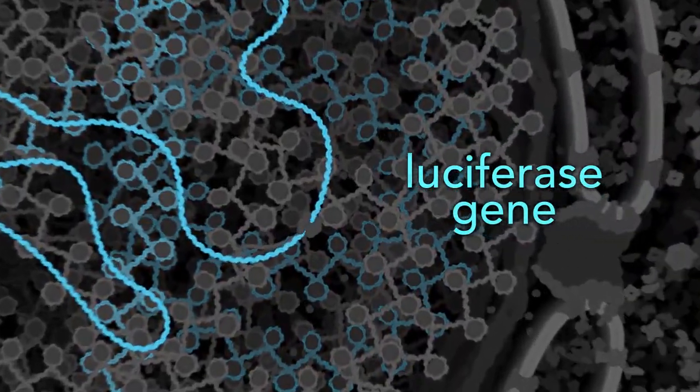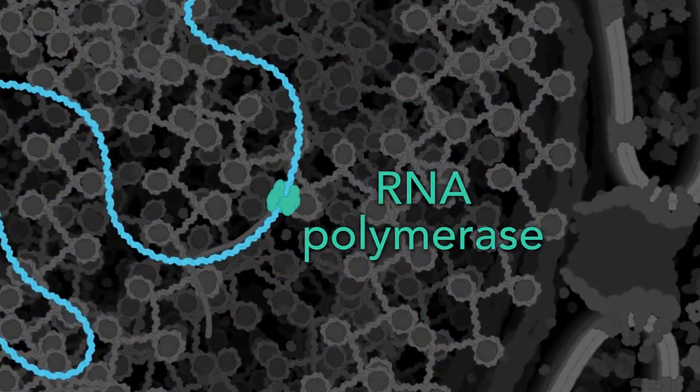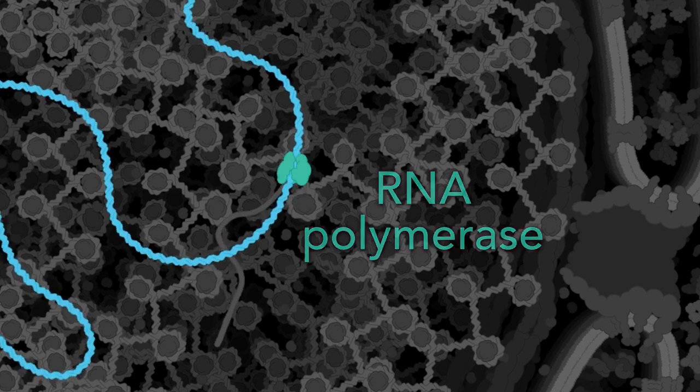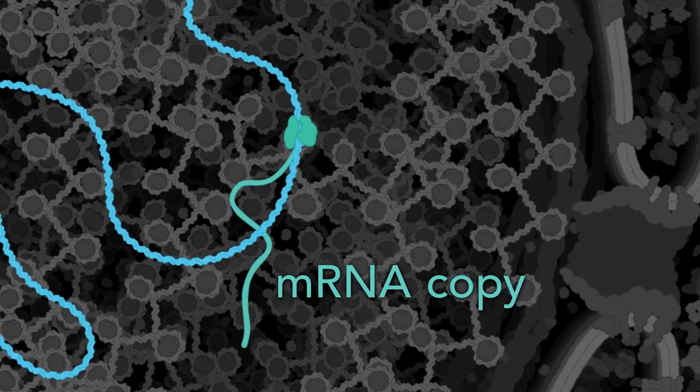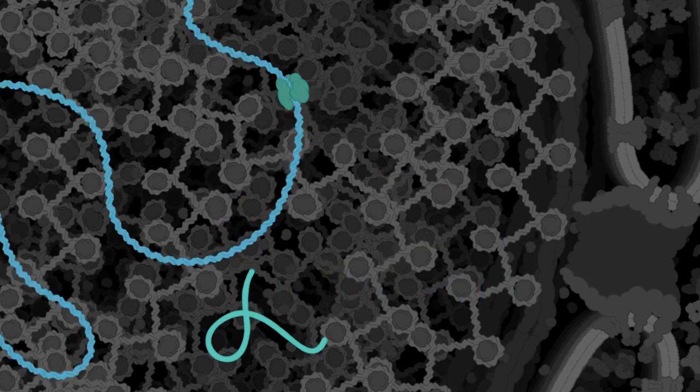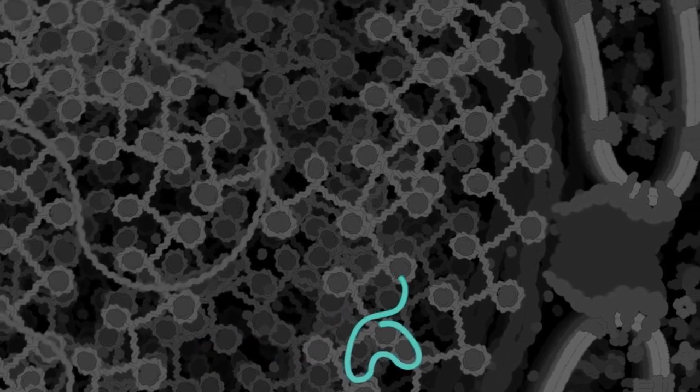A molecular machine called RNA polymerase makes a messenger RNA copy of the luciferase gene. The gene can be copied many times.